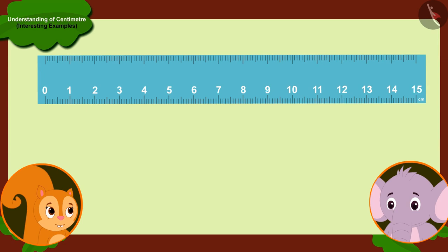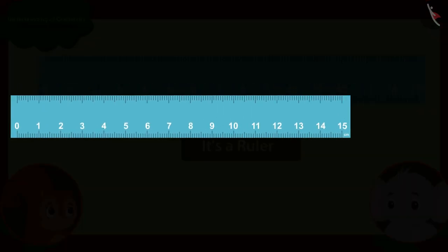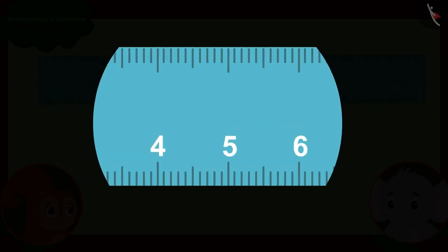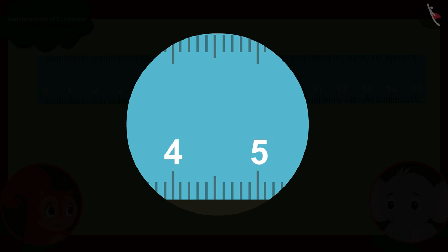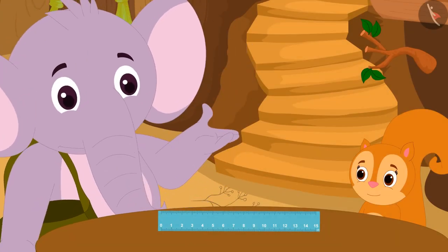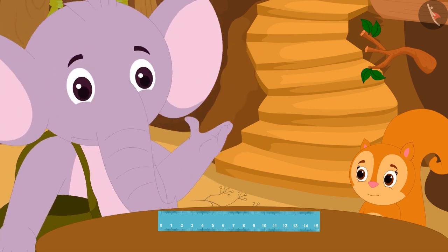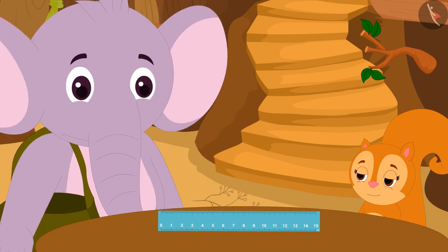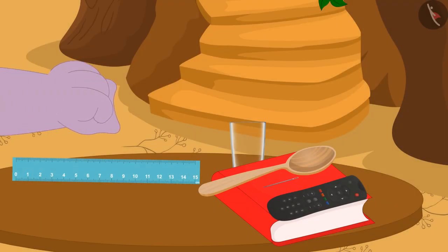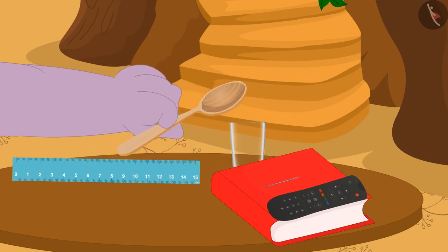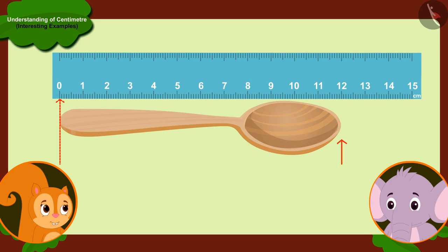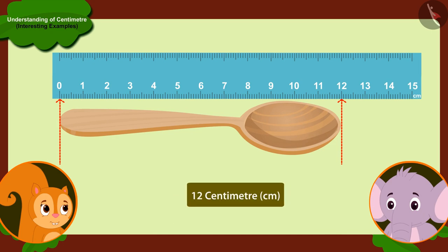Appu starts telling Chanda. Appu then asked Chanda to collect some items from her house whose length she wanted to measure. Chanda immediately collected those items and brought them. Appu first picked up a spoon of Chanda. He placed the spoon next to the ruler and said, look, your spoon is 12 centimeters long.